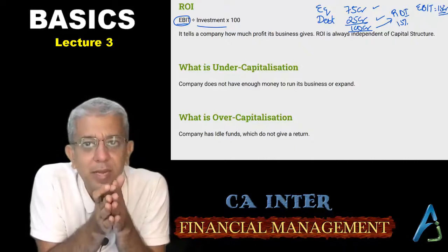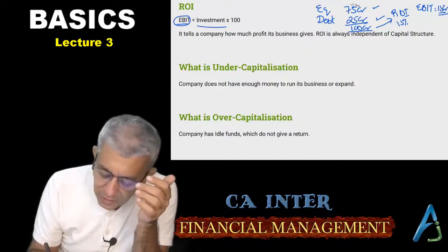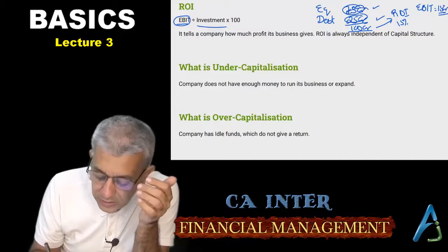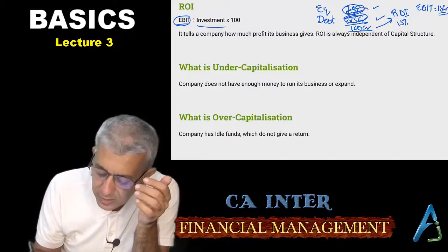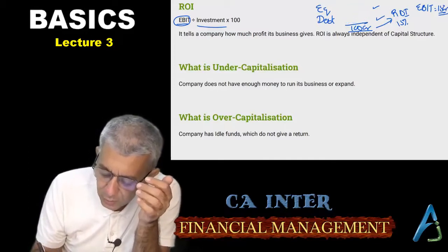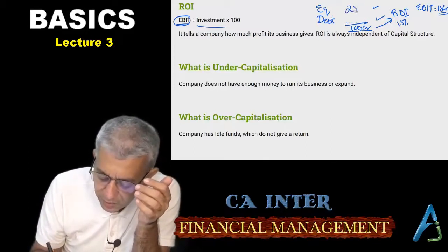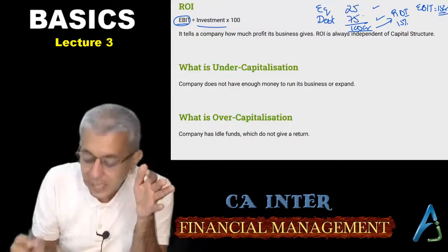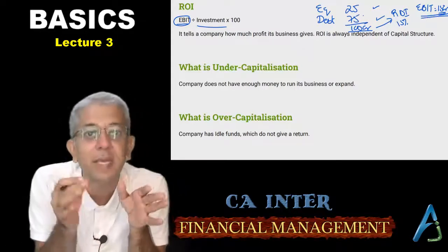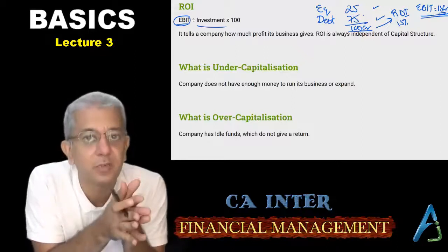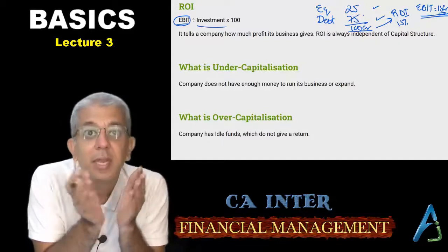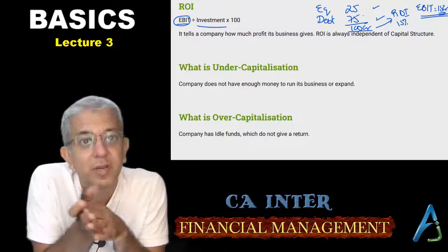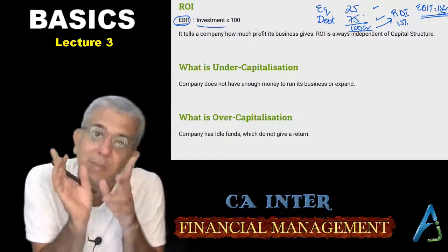Do remember that even if this 75/25 was reversed — that is, if equity was 25 and debt was 75 — still my EBIT will be the same. EBIT is how much return your business gives you. It does not matter from where you have got your funds. ROI will remain the same.